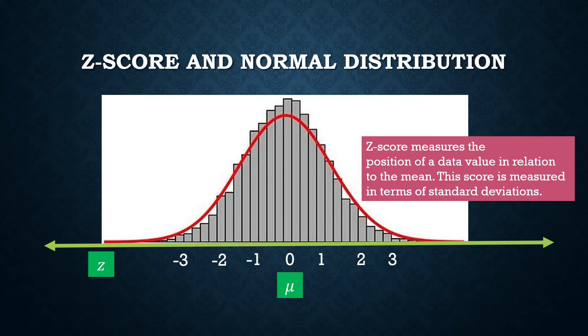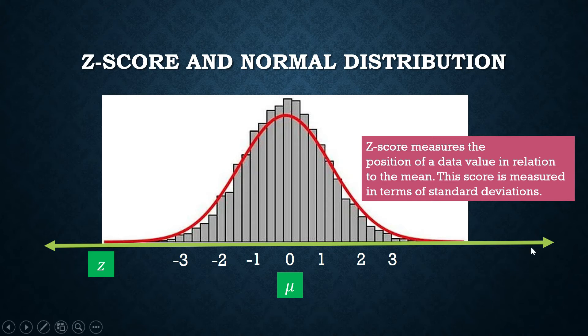The z-score measures the position of a data value in relation to the mean, and it is measured in terms of standard deviations. If a data value has a z-score of 1, it is one standard deviation above the mean. If a data value has a z-score of negative 1.5, it is 1.5 standard deviations below the mean.